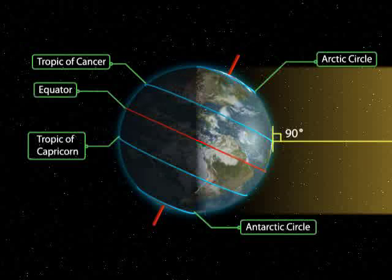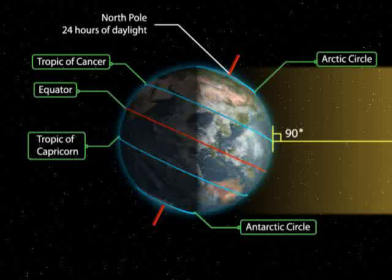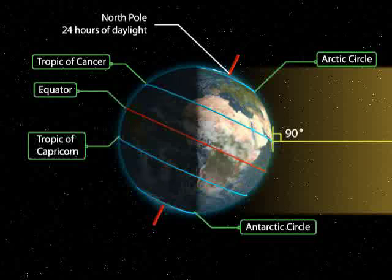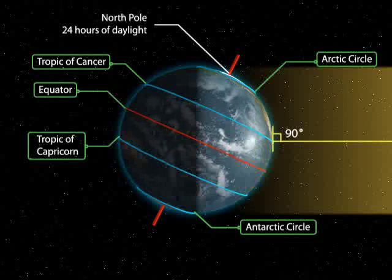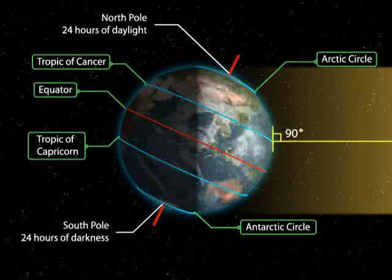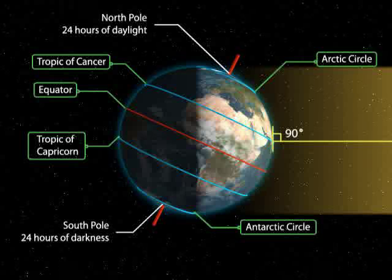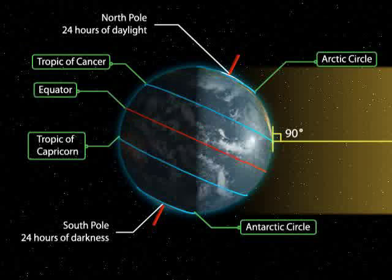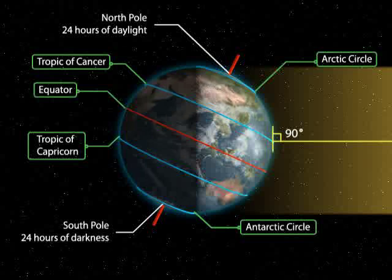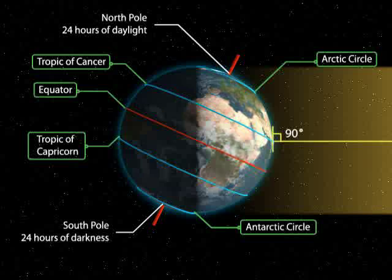Besides, there are 24 hours of daylight at the Arctic Circle, and 24 hours of darkness at the Antarctic Circle.